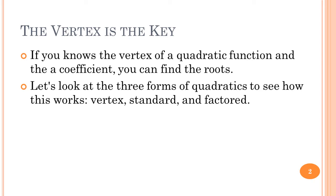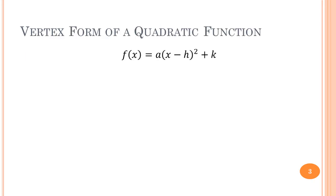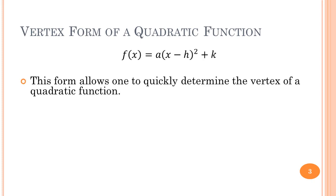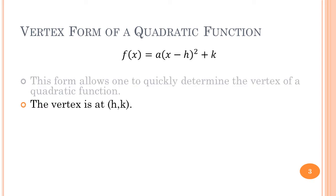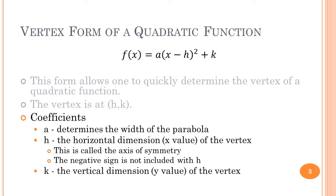Let's see how this works by looking at the three forms of quadratics: the vertex form, the standard form, and the factored form. We'll start with the vertex form, which looks like f(x) = a times the quantity x minus h squared plus k. The nice thing about this form is it gives you the vertex at h comma k. The coefficient a determines the width of the parabola. h is the horizontal dimension or the x-value of the vertex — this is called the axis of symmetry. Note the negative sign is not included with h. And k is the vertical dimension or the y-value of the vertex.